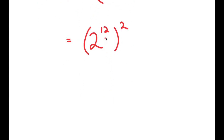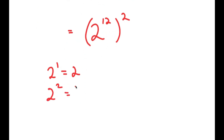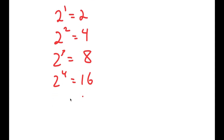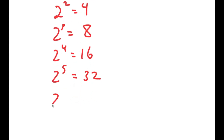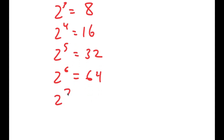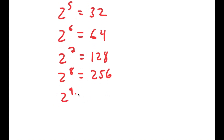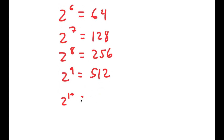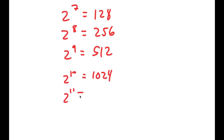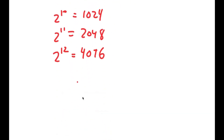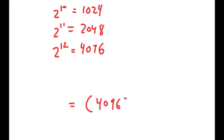Now 2^12: starting from 2^1 = 2, 2^2 = 4, 2^3 = 8 — I keep doubling this pattern until I reach 2^12, which equals 4,096. So now I get 4,096 squared.